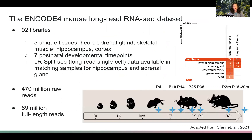For this project, we sequenced 92 libraries in bulk long-read RNA sequencing using PacBio from five unique tissues: heart, adrenal gland, skeletal muscle, hippocampus, and cortex. We sequenced these at seven postnatal developmental time points in both adrenal gland and gastrocnemius, which is the skeletal muscle, but only a subset of these time points for the remaining tissues, where we're hoping to fill in the rest later.